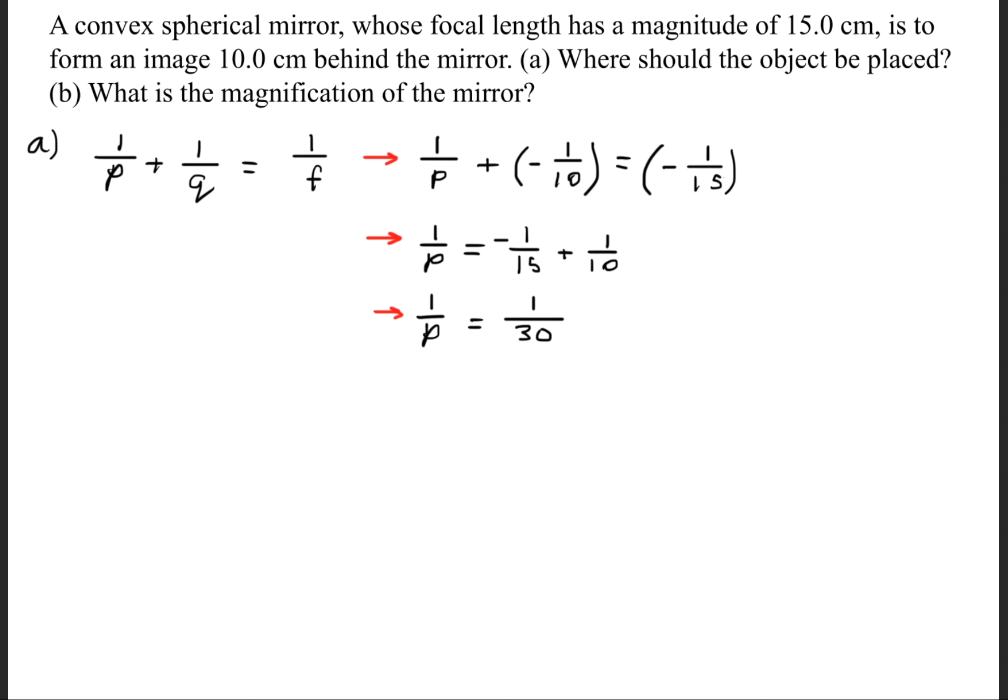So you go ahead and plug in your values and simplify, and we'll get that the object should be placed 30 centimeters in front of the mirror.